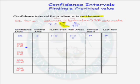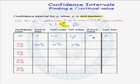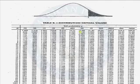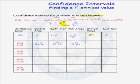If we have a 90% confidence interval, how much area is in the central part of our t-distribution? 90%. That leaves 10% unaccounted for, which has to be divided equally between the two tails — so 5% in each tail. Now we go to the t-table and look for 2 degrees of freedom with 5% in the upper tail. The t-critical value is 2.92.